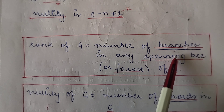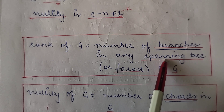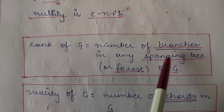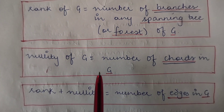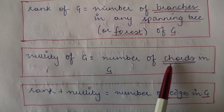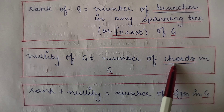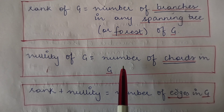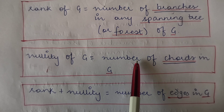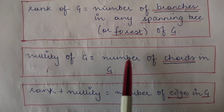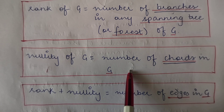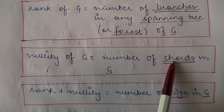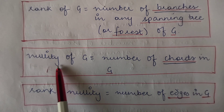If you count only those edges included in the spanning tree — or in the spanning forest if there is more than one spanning tree — you find the rank of the graph. The nullity of a graph is found by counting the number of cords, meaning only those edges which are not in the spanning tree or spanning forest. You exclude all edges present in the spanning tree or spanning forest and count the remaining edges to find the nullity.